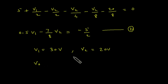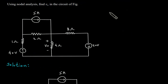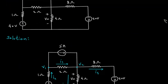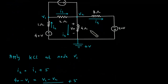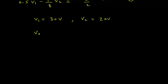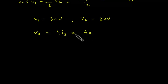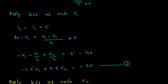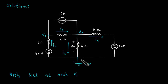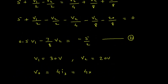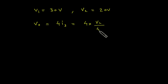We have to find VO. VO equals I3 times 4, and I3 is (V2 minus 0) / 4. So VO = V2. Since V2 equals 20 volts, VO equals 20 volts.